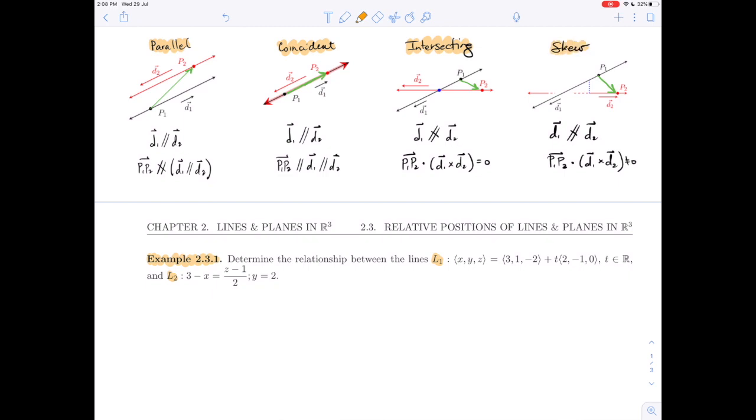We covered these in a previous video. And the test that we had for each of these, parallel and coincident lines both had the direction vectors d1 and d2 of the two lines parallel. Whereas intersecting and skew lines had non-parallel direction vectors.